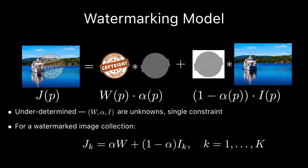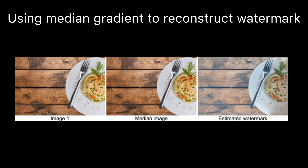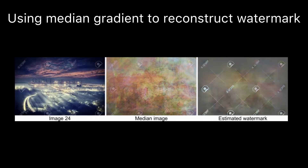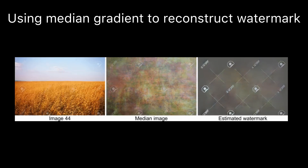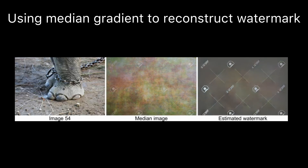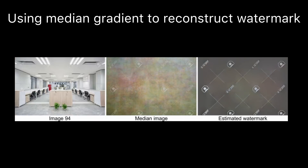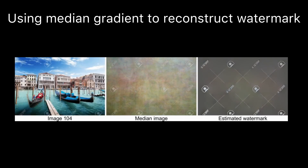We use a simple matting model, which is the one used most in practice. The unknowns are the watermark, its mask, and the underlying image. The watermark is assumed to be the same for all of the images. Here we show that as the number of images grows, a simple integration of the median image gradient gives a good estimate of the unknown watermark image, and that's used to initialize the algorithm.